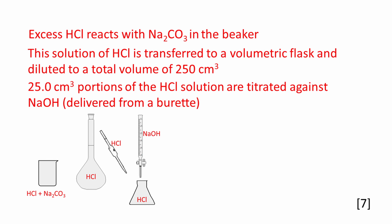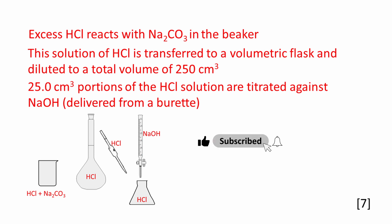This beaker now contains excess hydrochloric acid. The solution in the beaker is transferred to a volumetric flask and diluted to a total volume of 250 cm³. Finally, 25 cm³ portions of the hydrochloric acid solution are titrated with sodium hydroxide.